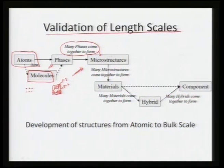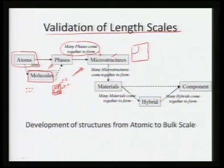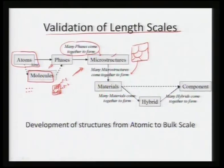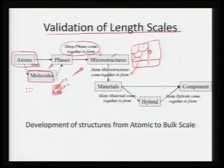Many microstructures of different types can form a material. These can include nano porosity somewhere or even bulk segregation. We can see a very complicated structure developing at the micro length scale. Many microstructures make up a material — we can have multiple types including nano porosity or segregations.